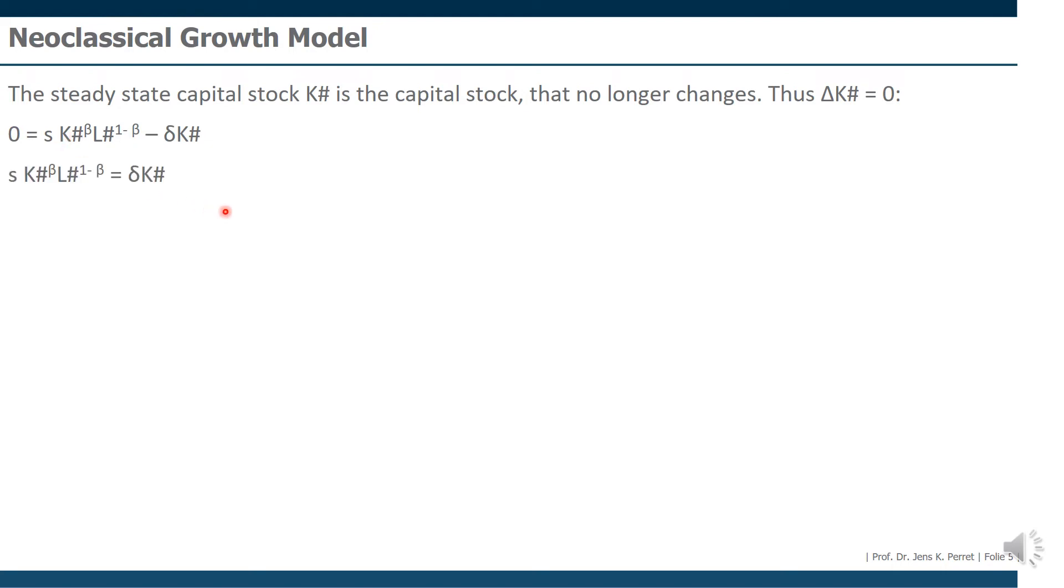So what we can do is, first off, we bring this to the other side, then solve this for k#, giving us our steady state capital stock. So we're solving this for k, having this intermediate step, and then getting this solution for our capital stock in the steady state. And we see this capital stock in the steady state depends on the amount of available laborers, positively, positively as well for a savings rate, and negatively on the depreciation rate.